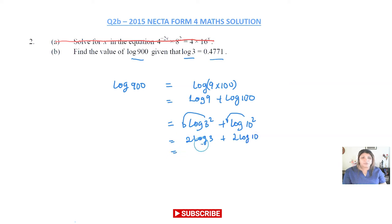Okay, so log 3 we're told is equal to that number there. So 2 × 0.4771 plus what's log 10.